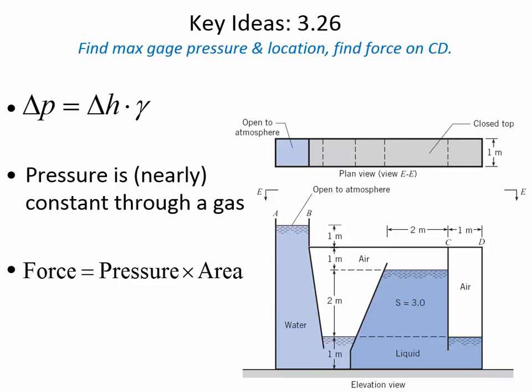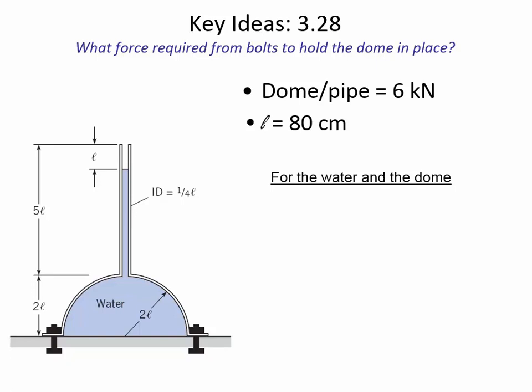Those are the hints for that problem. Now for the next one, this is a special device that's bolted onto a table, and there's water inside it. They tell you the dimension L is 80 centimeters. You can use the hydrostatic equation to find the pressure at the bottom of this special-looking tank. The width doesn't matter — even though this top section is very narrow, the pressure is still increasing at the same rate according to delta P equals delta H times the unit weight of the liquid.